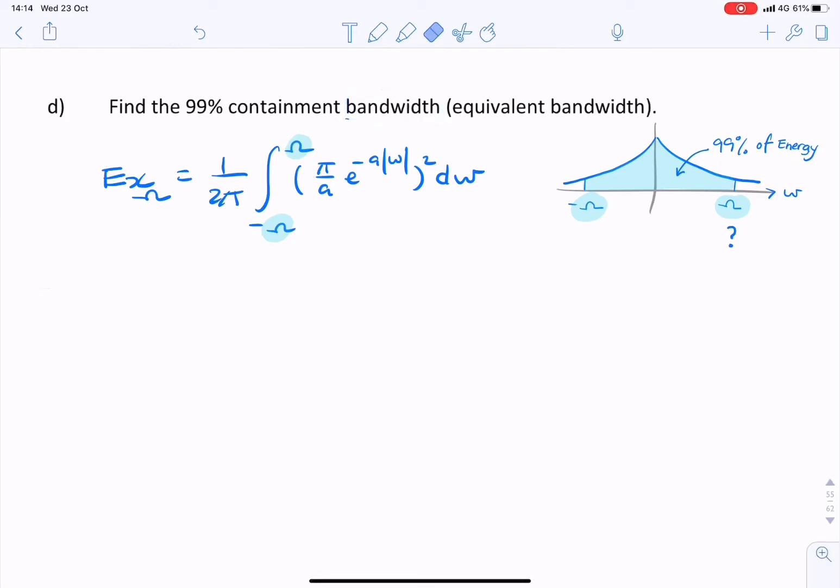So we'd simply carry out the same integral, and rather than repeat the integration, we can simply use the same steps we used for Part C. But instead of integrating from minus infinity to zero, the limits would be minus ω to zero and zero to positive ω.